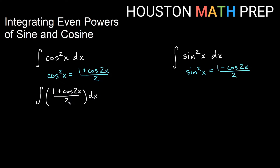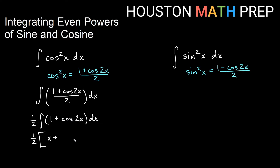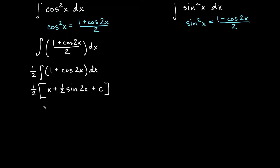Everything is over 2, so I think the clearest thing is to bump that out as a 1 half. We'll really see this as 1 half times the integral of 1 plus cosine 2x. The antiderivative of 1 is x. The antiderivative of cosine 2x is sine 2x, and because of the 2x, the reciprocal of 2 comes out, giving us a 1 half there, plus our constant c. Distributing the 1 half gives us an answer of 1 half x plus 1 fourth sine of 2x plus c.